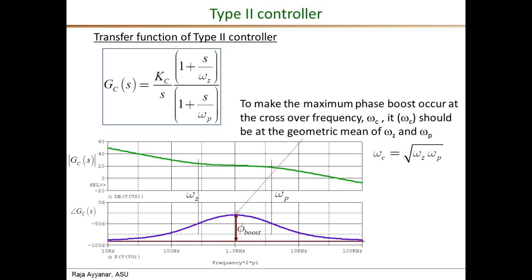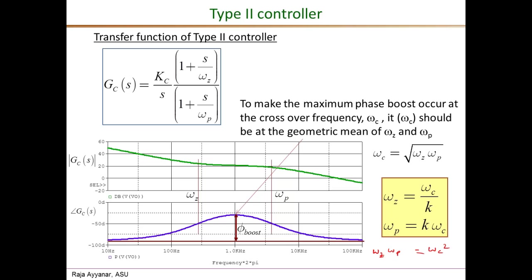The geometric mean means that omega_c equals the square root of the product omega_z times omega_p. Once we agree on that, we choose omega_z as the crossover frequency divided by K — this K gives the name to the K-factor method — and omega_p as K times omega_c. Multiplying both sides, the K's cancel and you have omega_c squared, confirming omega_c is exactly at the geometric mean. The question then is: how do you select the value of K?